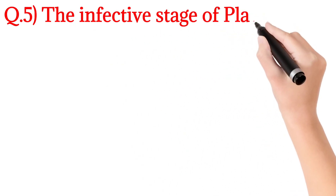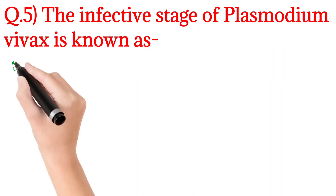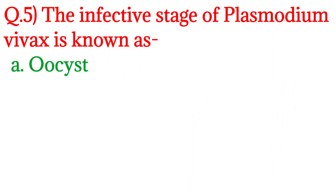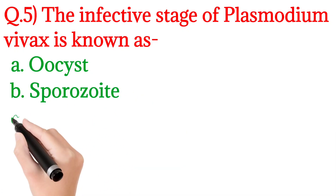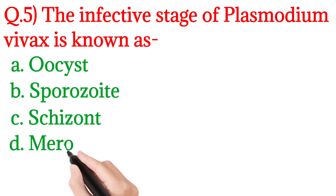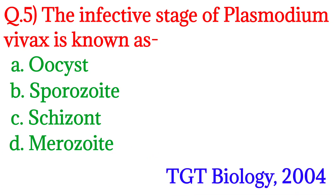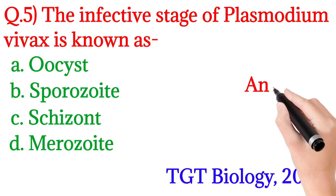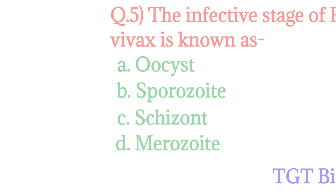Question 5: The infective stage of Plasmodium vivax is known as? Option A: Oocyst, Option B: Sporozoite, Option C: Schizont, Option D: Merozoite. This question was asked in TGT Biology 2004. The answer is Option B: Sporozoite. Sporozoite is the infective stage of Plasmodium vivax.